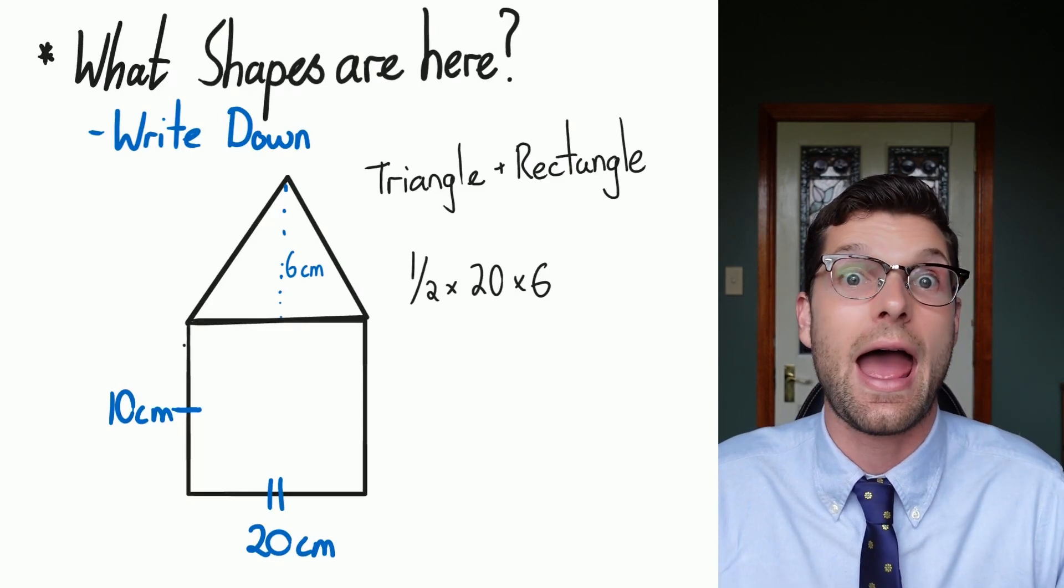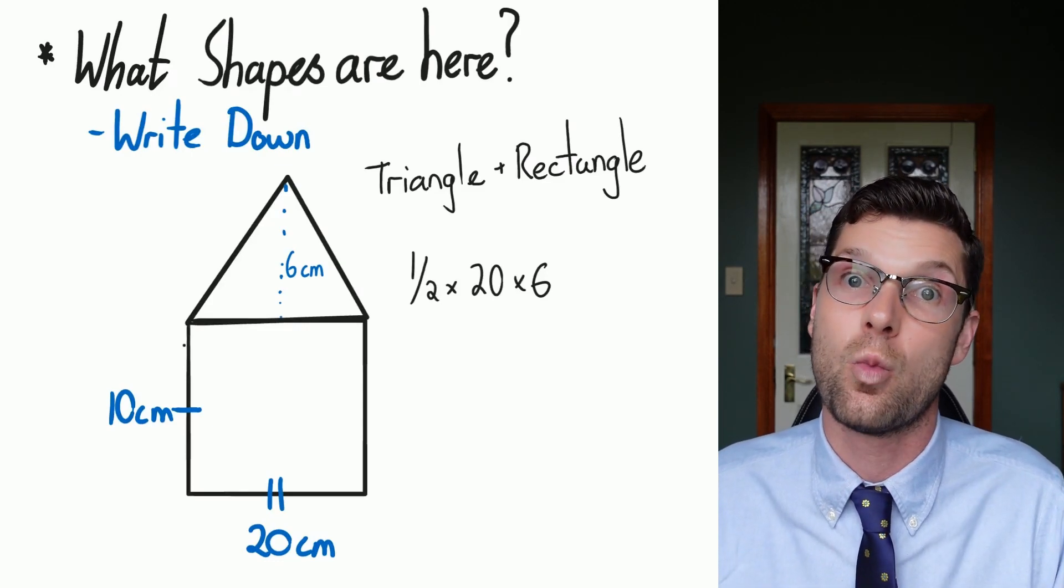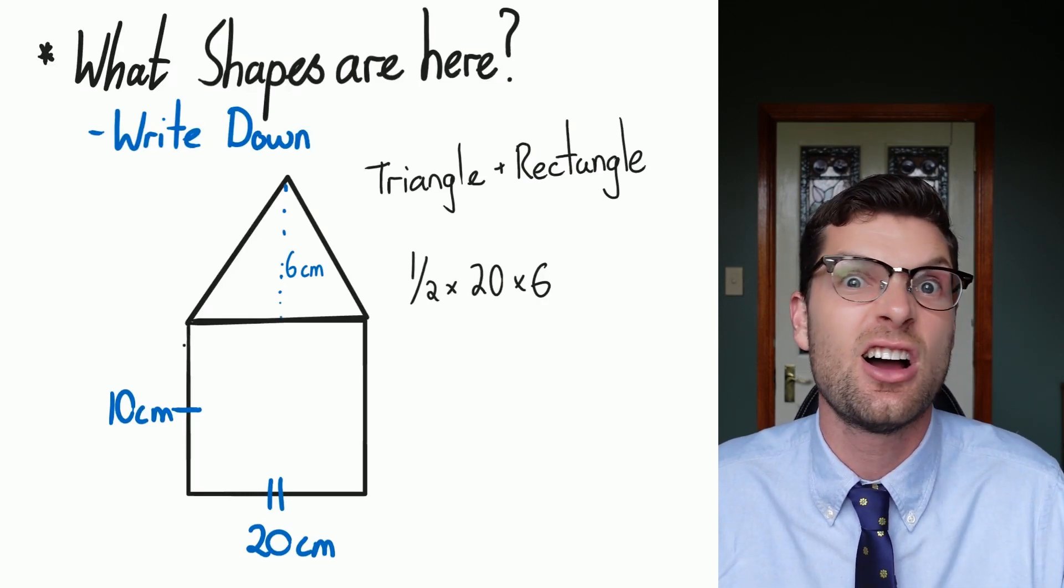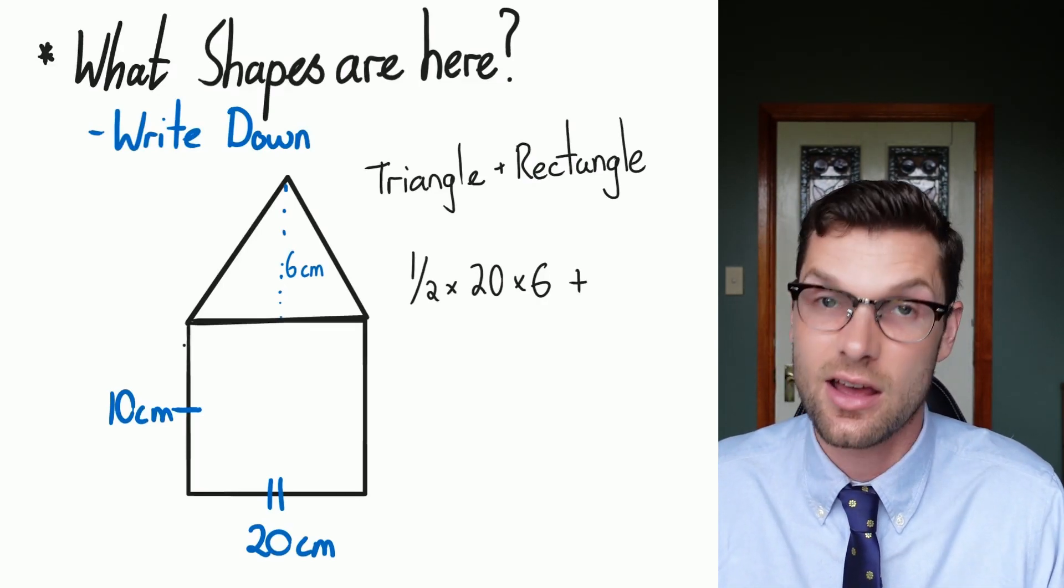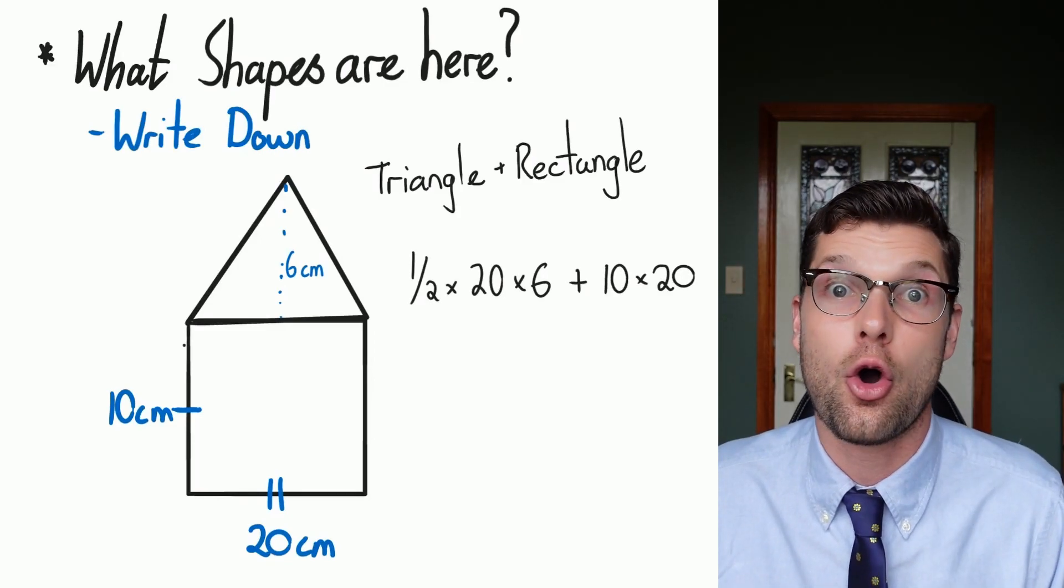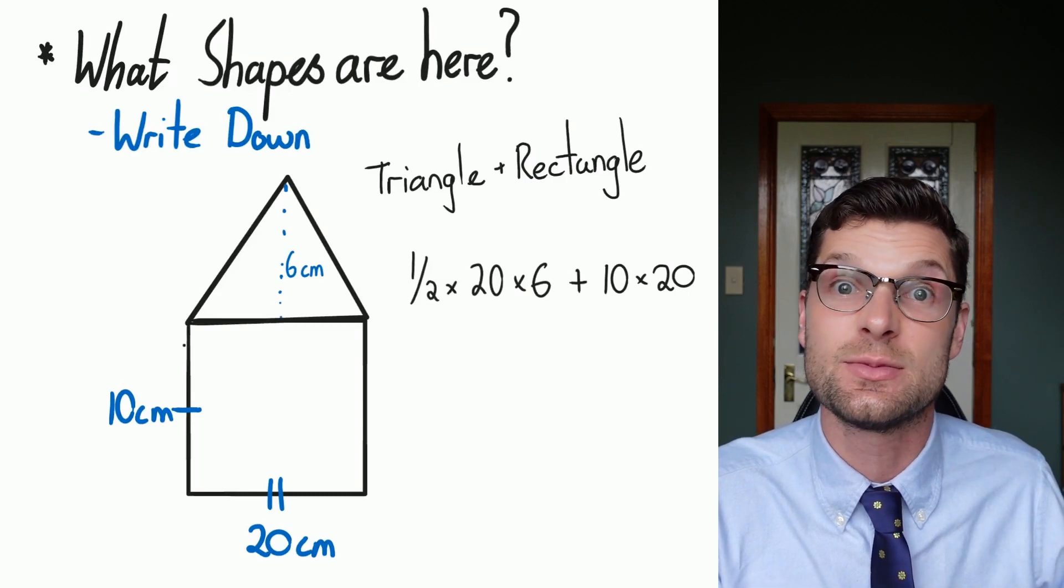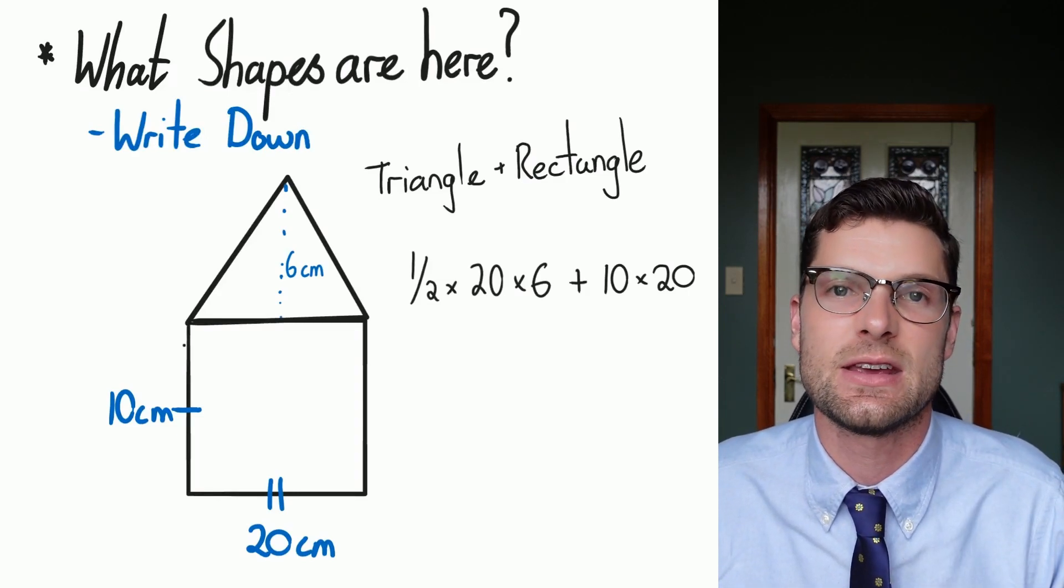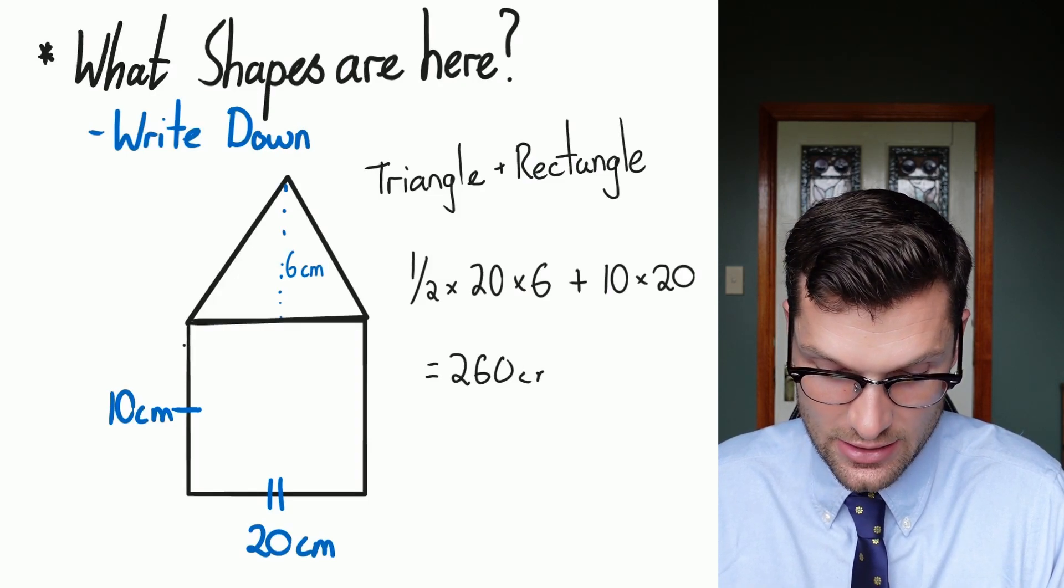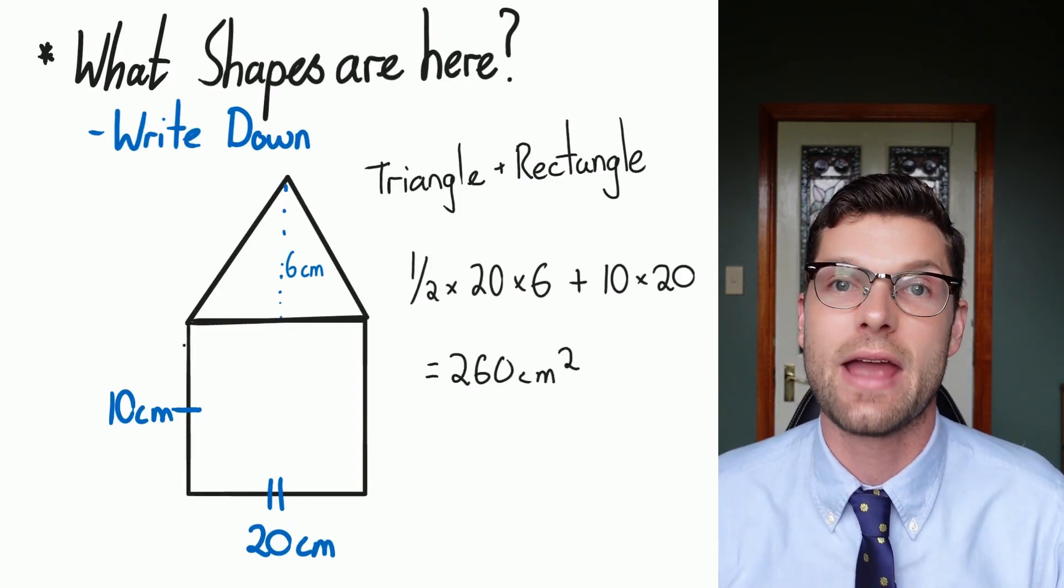I could do that right now and get the answer or I can do it all in one step. Because I know I've got to plus the area of the rectangle, all I have to do is go plus 10 times 20 and that'll give me that bottom section. If I throw that all into my calculator, the first bit gives me 60, the second bit gives me 200, so my answer is 260 centimeters squared and that's all we have to do.